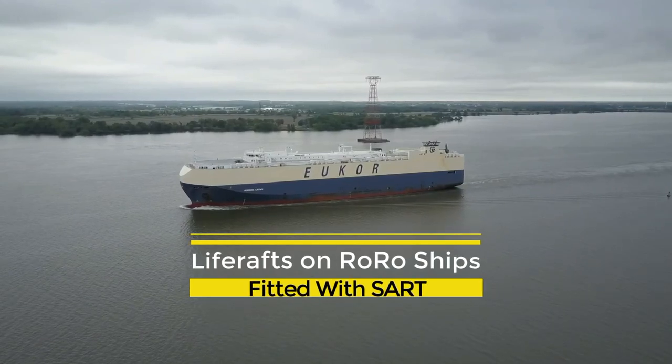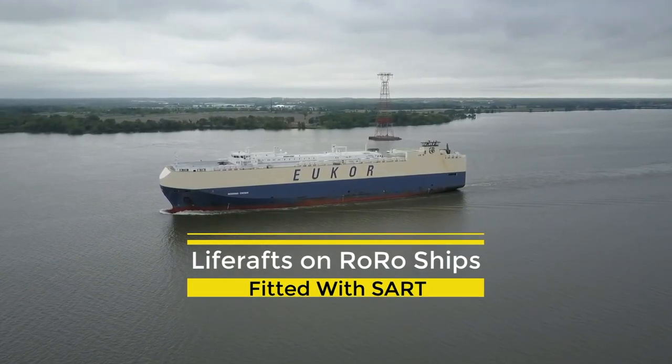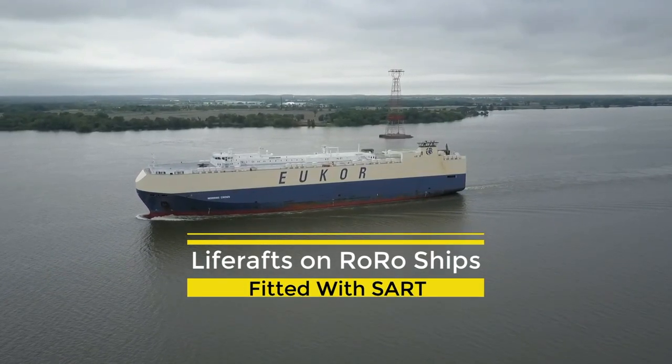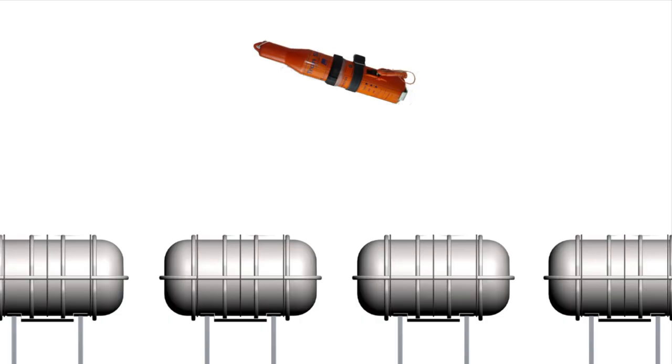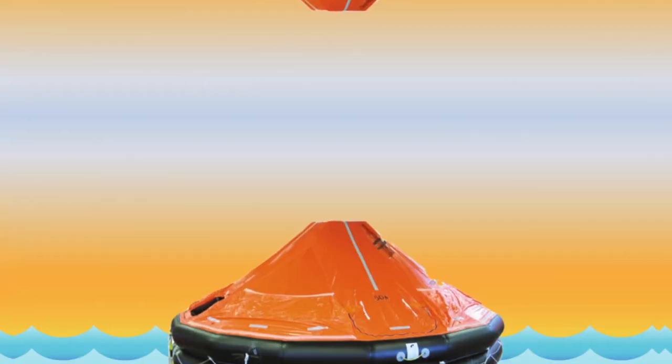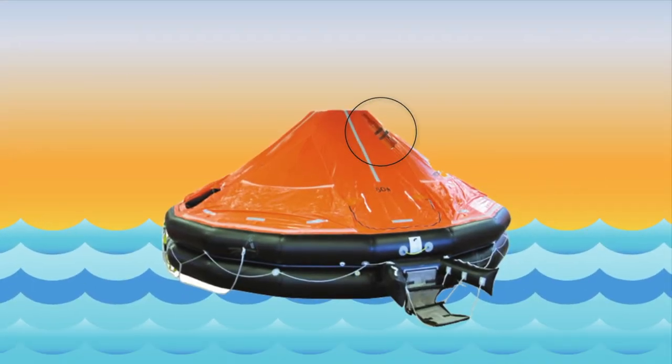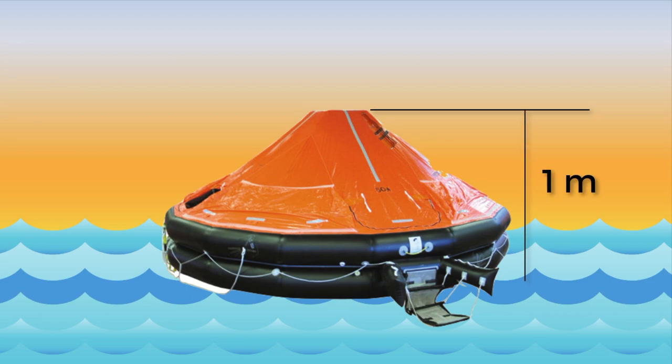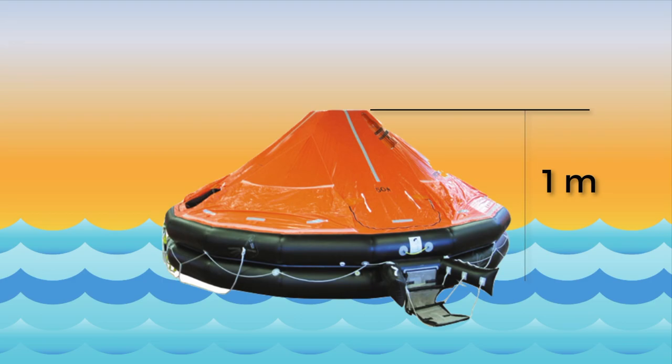Life rafts carried on Roro passenger ships shall be fitted with a radar transponder in the ratio of one transponder for every four life rafts. The transponder shall be mounted inside the life raft so its antenna is more than one meter above the sea level when the life raft is deployed.